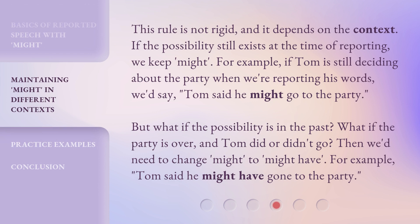This rule is not rigid, and it depends on the context. If the possibility still exists at the time of reporting, we keep 'might.' For example, if Tom is still deciding about the party when we're reporting his words, we'd say, 'Tom said he might go to the party.' But what if the possibility is in the past? What if the party is over, and Tom did or didn't go? Then we'd need to change 'might' to 'might have.' For example: 'Tom said he might have gone to the party.'